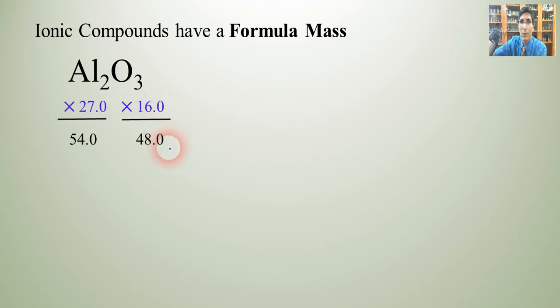So the total formula mass for that compound is just the sum of those. So add it together and you get 102.0 atomic mass units and so that's the formula mass of aluminum oxide.